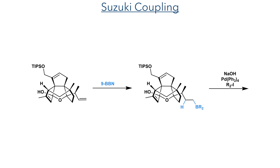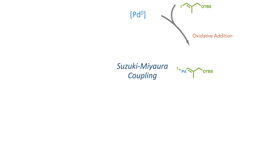To complete the sidechain, they then functionalized it using a Suzuki coupling. 9-BBN was first added, and this undergoes addition to the terminal alkene, with the boron adding to the less sterically hindered side. This reaction was heated for one hour and then cooled to room temperature, after which aqueous sodium hydroxide, a solution of an alkenyl iodide in THF, and palladium tetrakis were sequentially added.